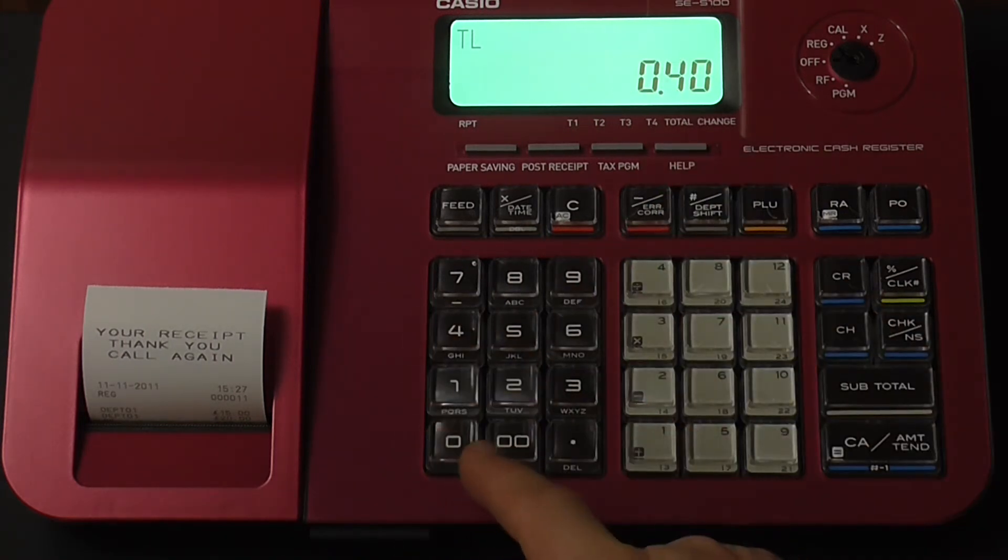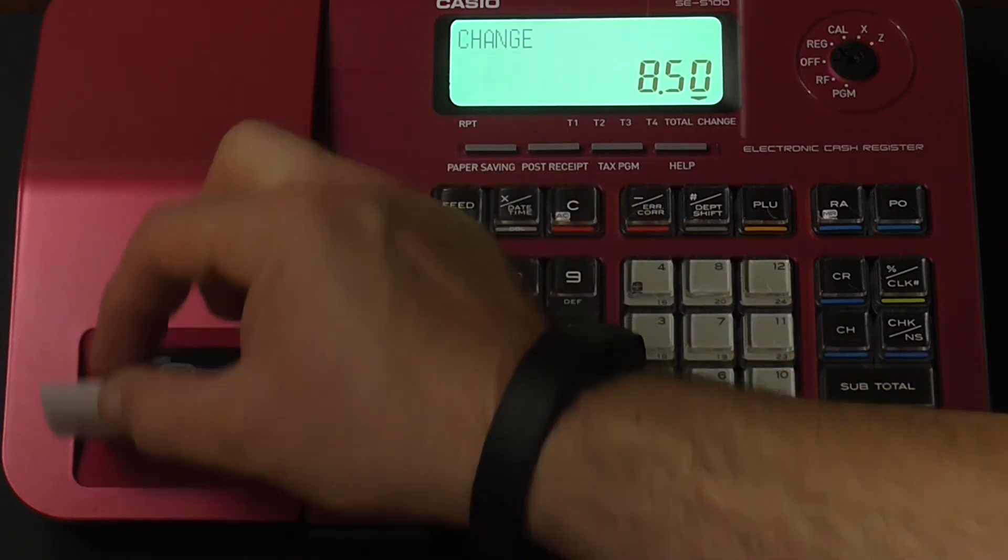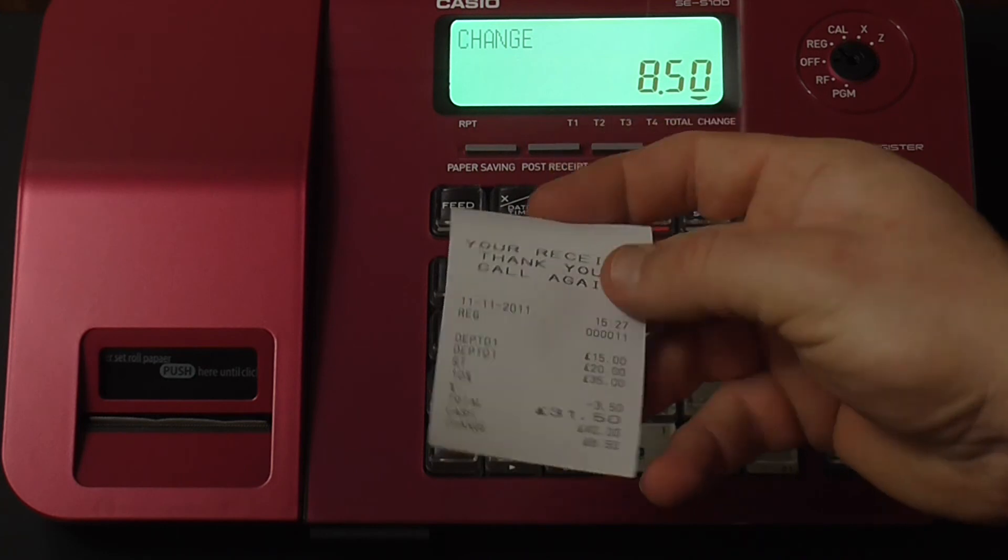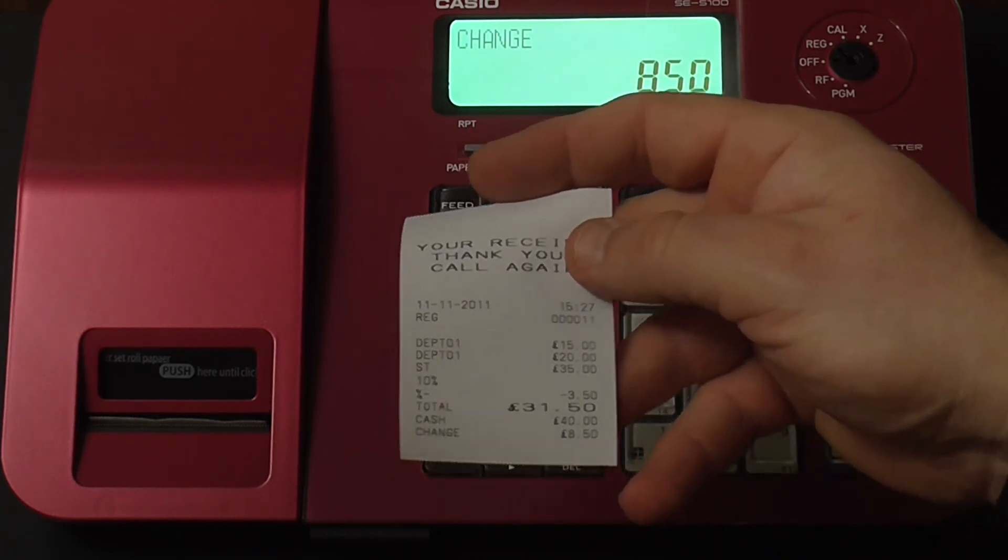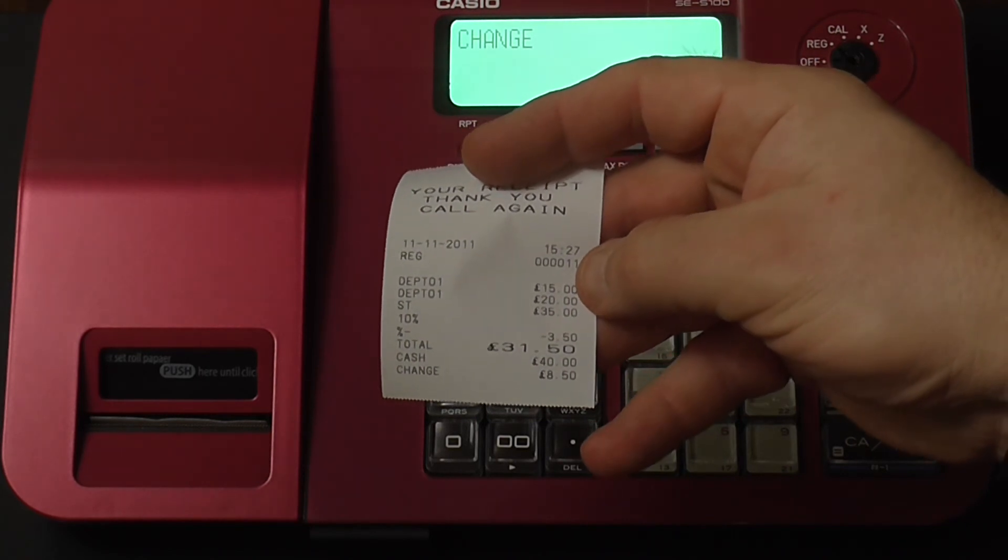They may give you £40 cash, so you type in 40 and press cash. And then on the receipt you'll get the details where it comes up: percentage 10% off, £3.50 for my £35 sale.